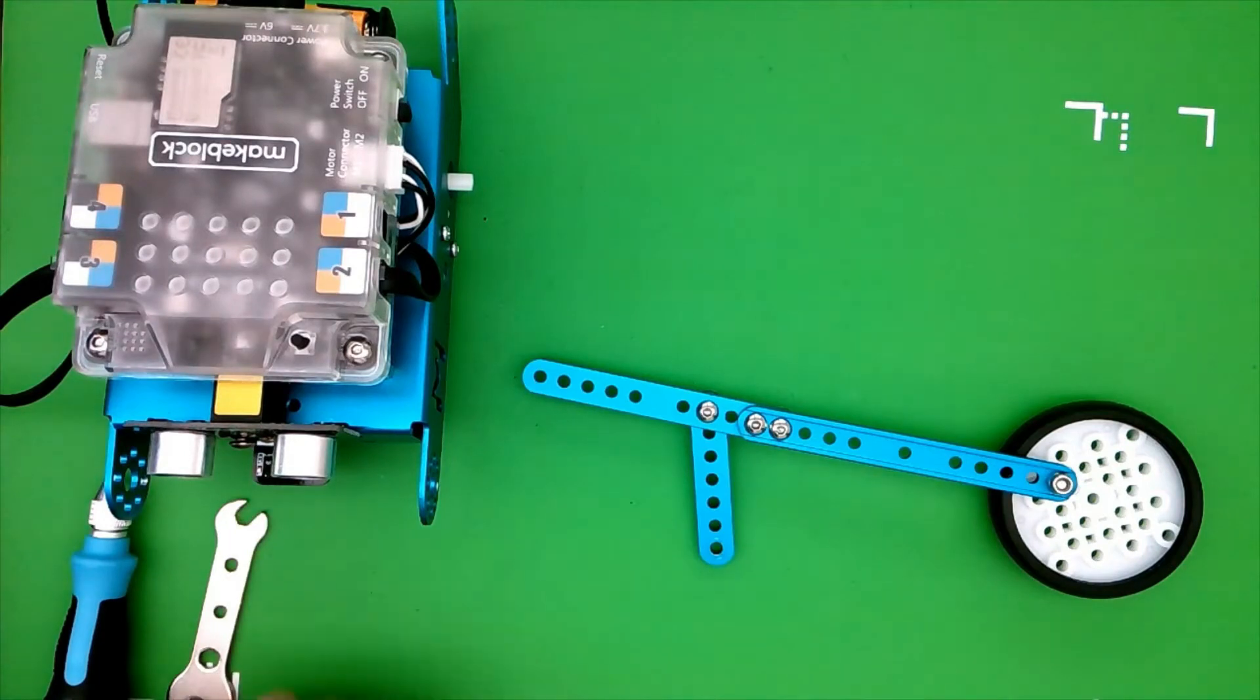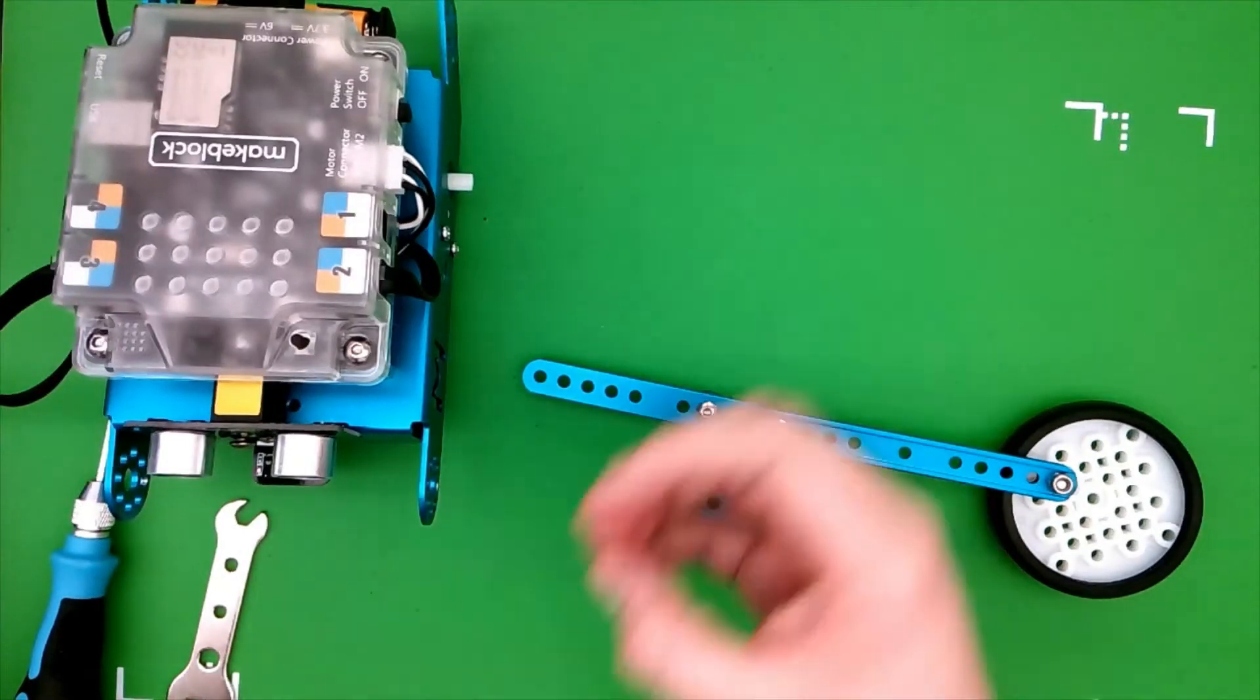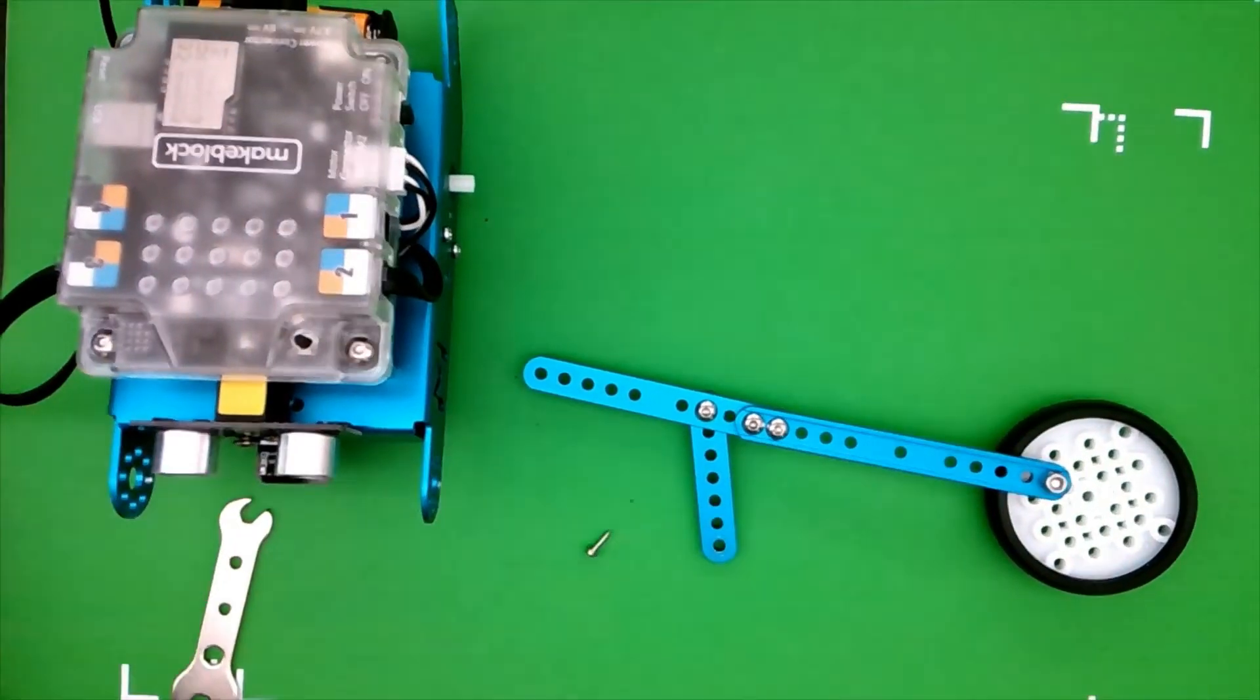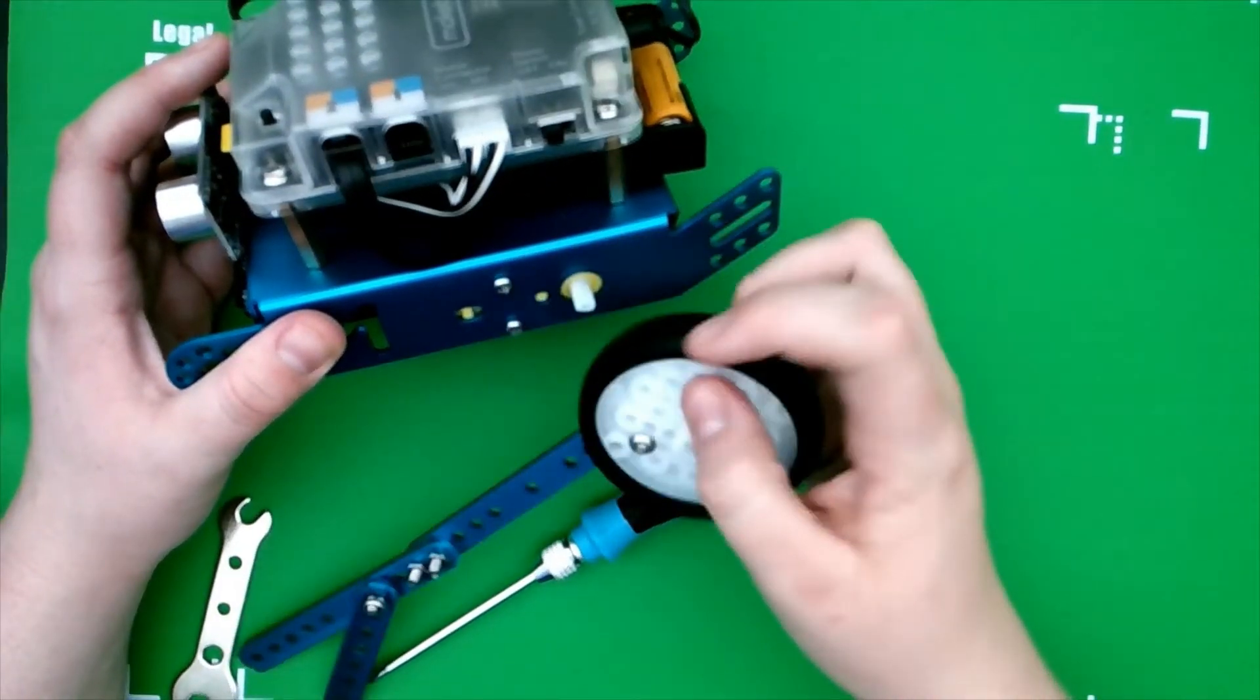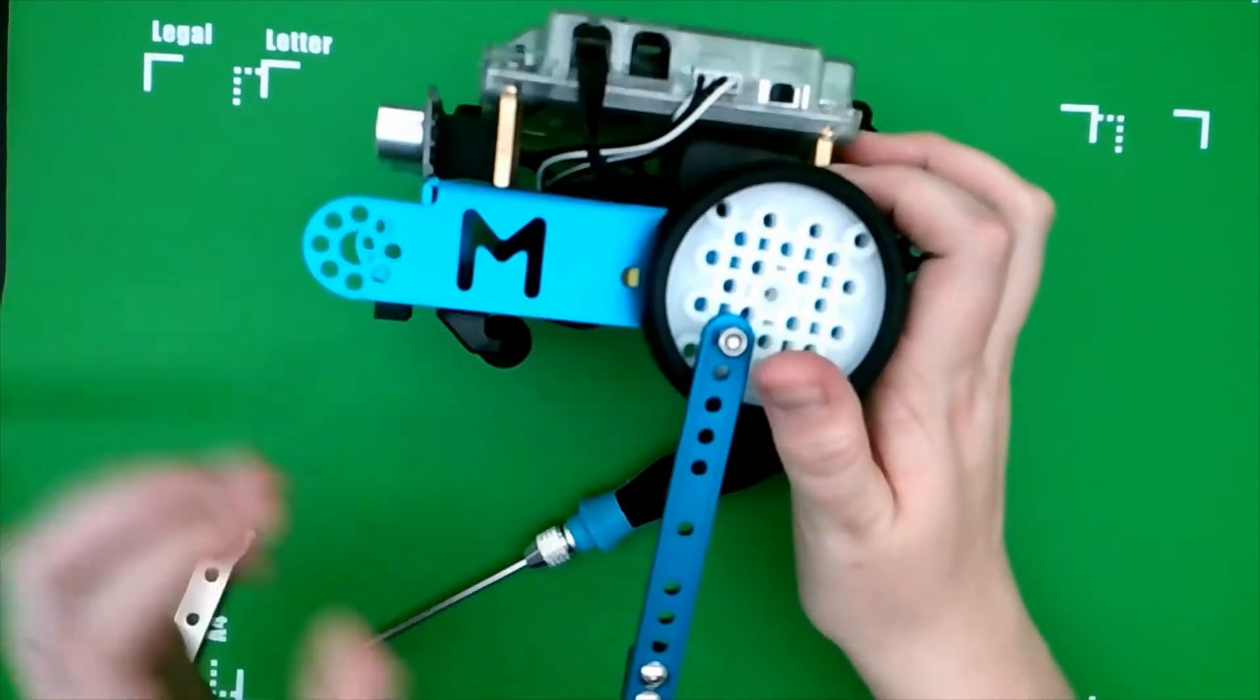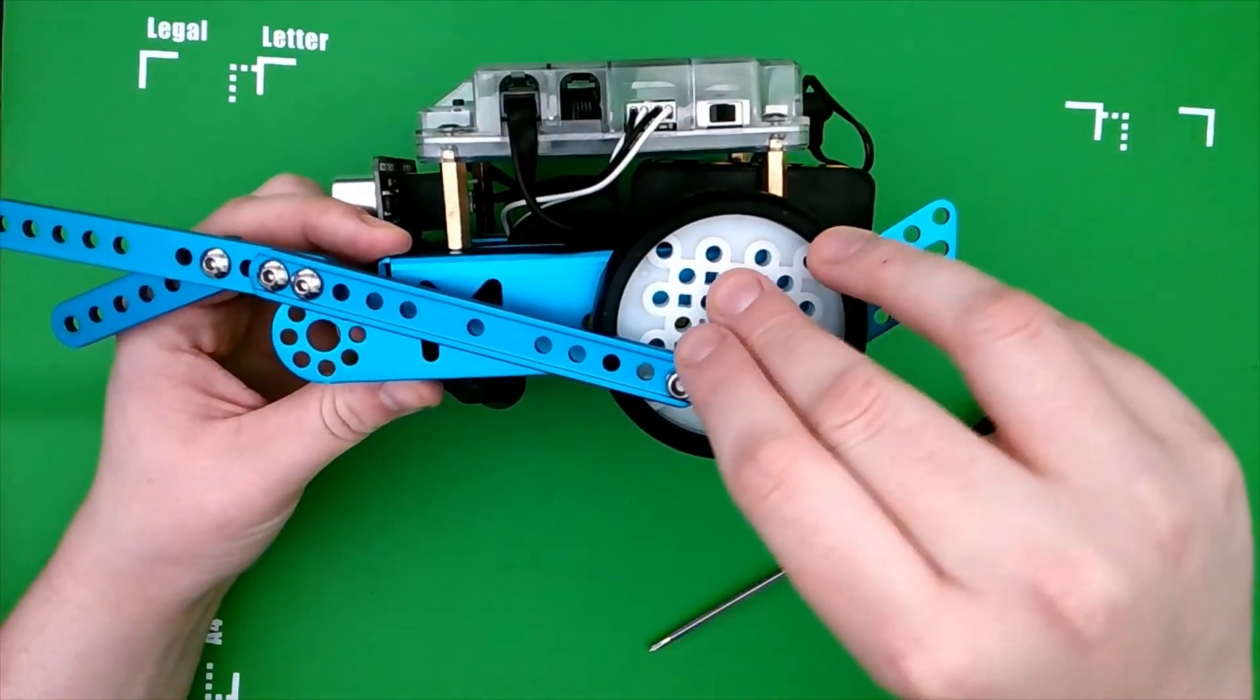Okay, now we're going to move on to step three, which is actually going to be attaching this tire to our robot. So get the self-drilling screw that you put the tire on with. Okay, and now we're just going to attach the wheel, put it on there, and then you're just going to screw that screw in.